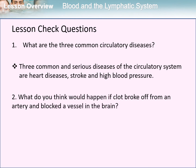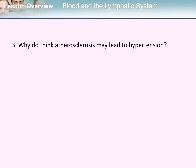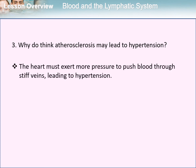Second question: what do you think would happen if a clot broke off from an artery and blocked a vessel in the brain? The answer is sudden death of brain cells due to lack of oxygen. Third question: why do you think atherosclerosis may lead to hypertension? The heart must exert more pressure to push blood through stiff arteries, leading to hypertension.